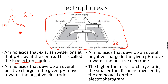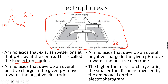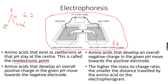If the isoelectric point of this amino acid is 6.2, that means at pH 6.2 it exists as a zwitterion — it will have an NH3+ here and a negative charge on the acid group. Since the charges cancel out and it is neutral, it can neither travel to the positive side nor the negative side, so the overall charge is 0 and it stays at the center.